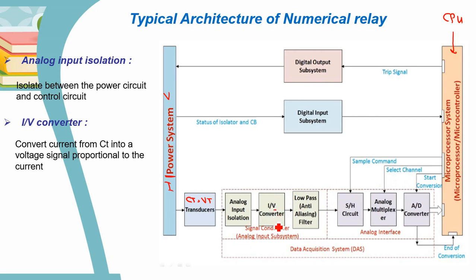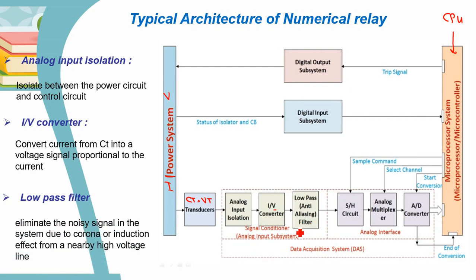Then we have the low-pass filter, also called the anti-aliasing filter. This filter is used to eliminate noisy high-frequency signals that occur in the main signal due to corona or induction effect from a nearby high-voltage line. It passes low-frequency signals such as our power signal at 50 or 60 Hz, and eliminates the high-frequency noise.